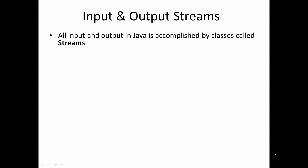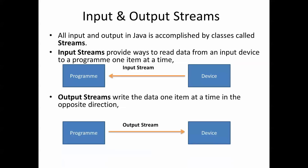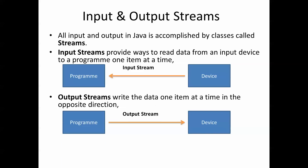All input and output in Java is accomplished by classes called streams. Input streams provide ways to read data from an input device to a program one item at a time. Output streams write the data one item at a time in the opposite direction. It's important for us to understand streams if we're going to understand File I/O.